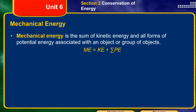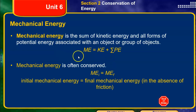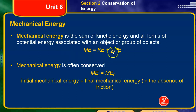Mechanical energy is really just the sum of kinetic and potential. Mechanical energy is often conserved, and because of that, the initial mechanical energy — which is the sum of kinetic and potential — is equal to the final mechanical energy. Note that this applies in the absence of friction, because friction will take out energy.